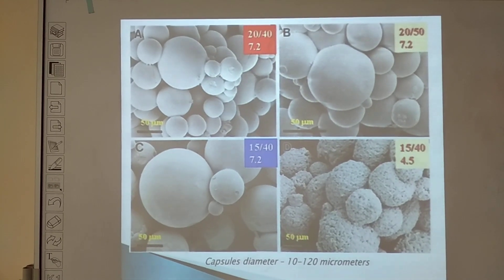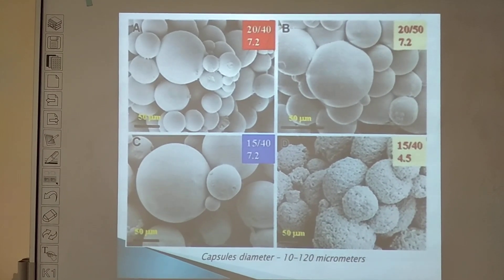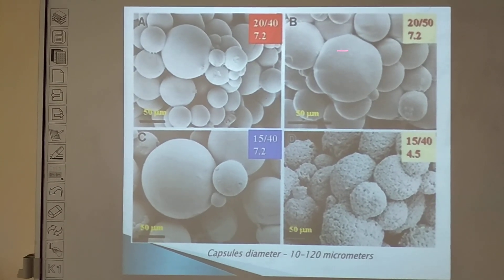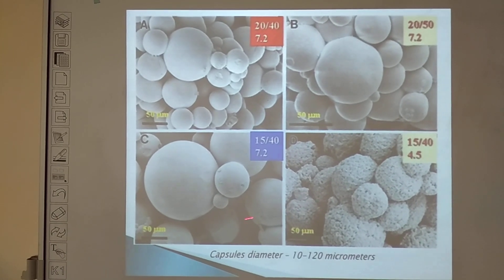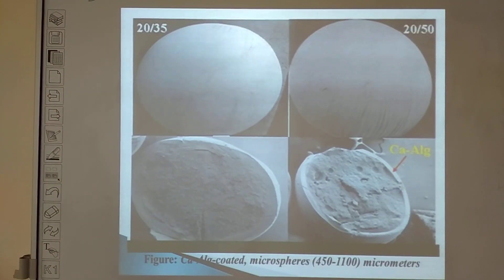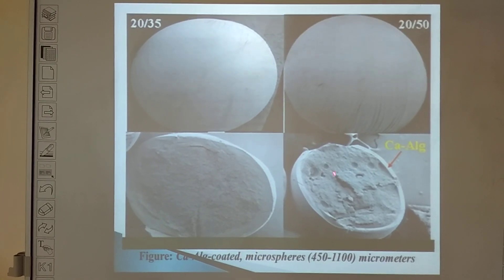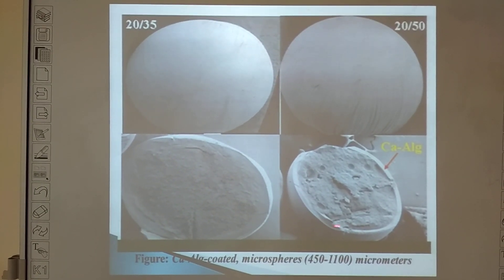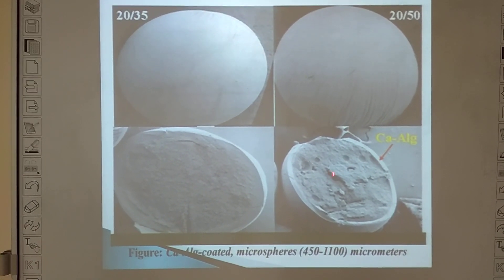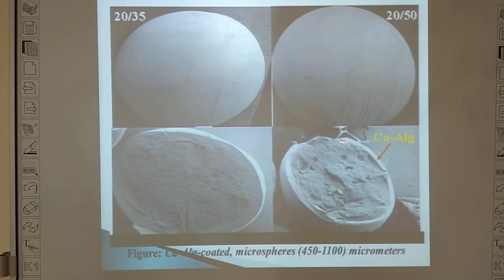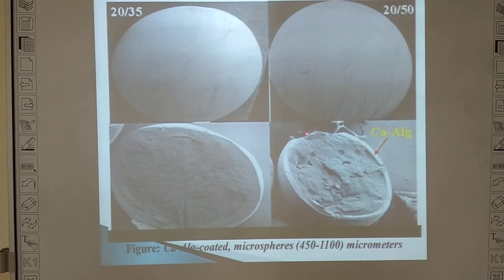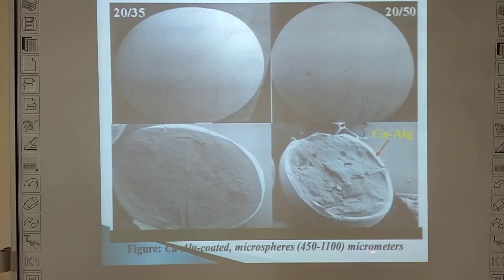When we formulate microcapsules and observe them under scanning electron microscopy, the picture shows microcapsules having a diameter in the range of 10 to 120 micrometres. In the cross-section of microcapsules, the coating material made from polymer is visible on the outside, and the drug is inside. One example shown is a drug coated with calcium alginate polymer, measuring 450 to 1000 micrometres in size.